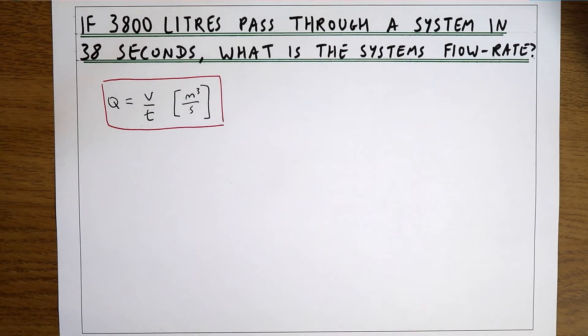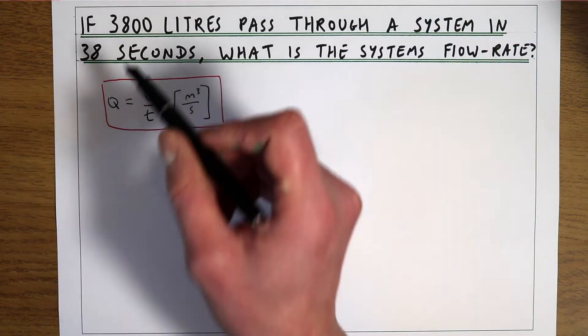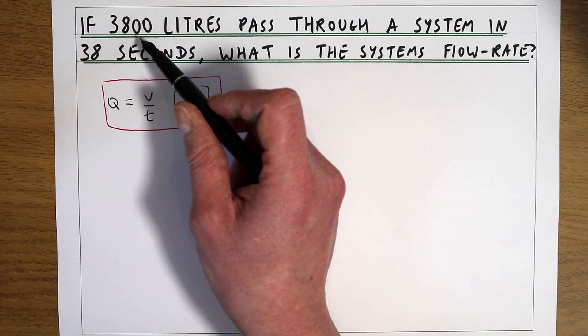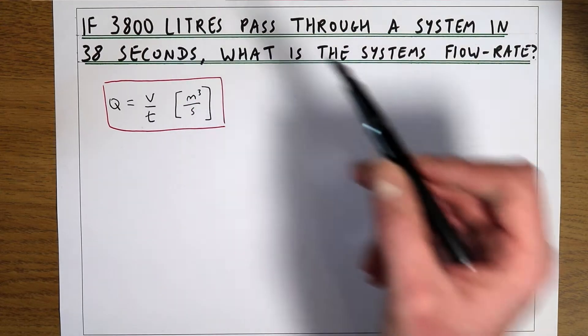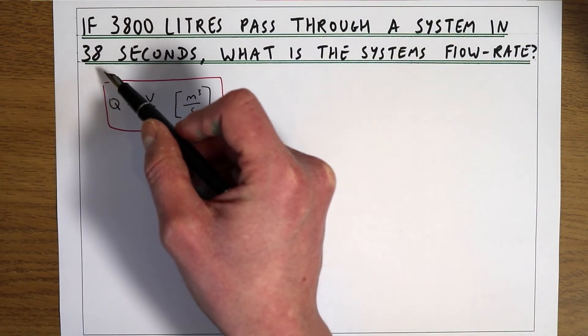In this question we're told that 3,800 litres are passing through the system and they're passing through the system in 38 seconds.